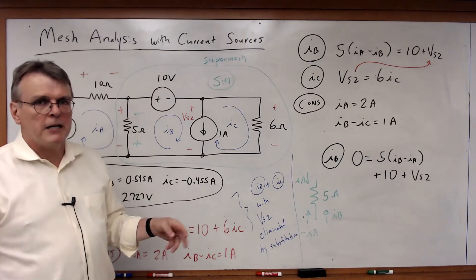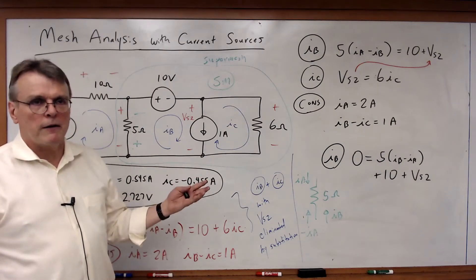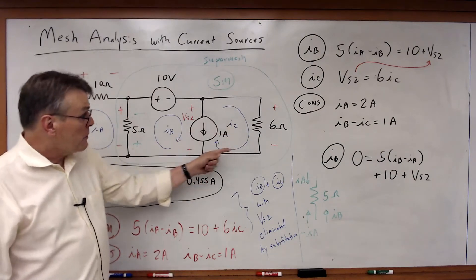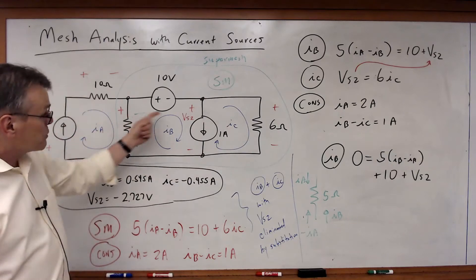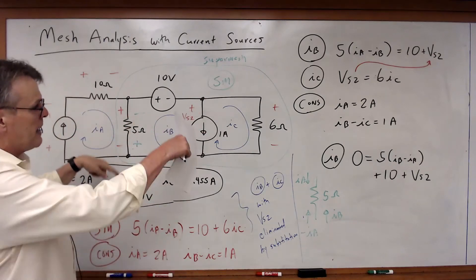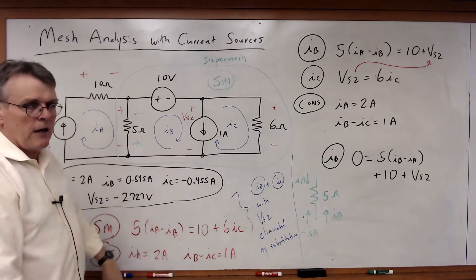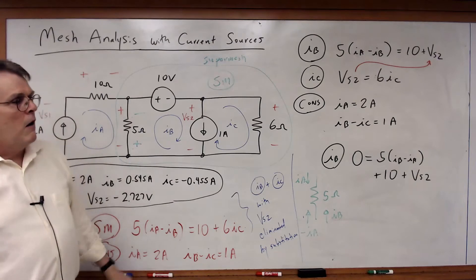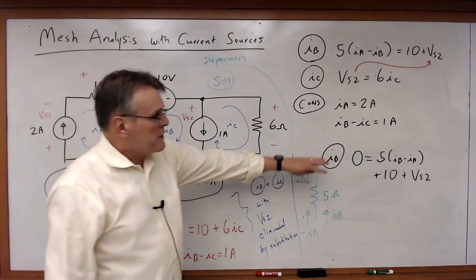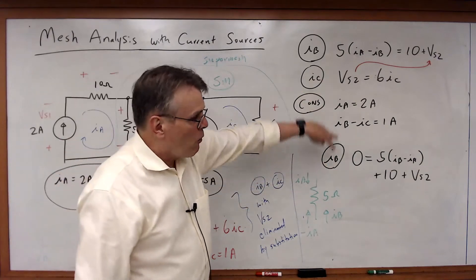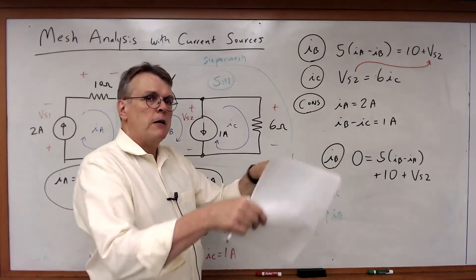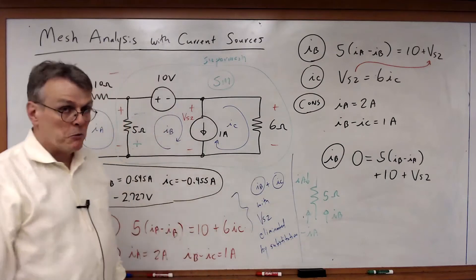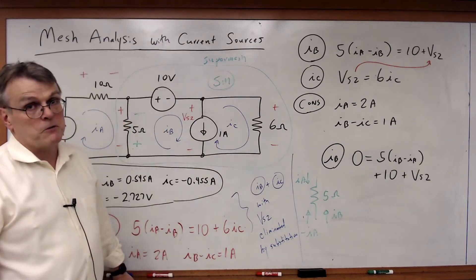You will not get a wrong answer as long as you correctly express the voltage drop through a resistor in terms of the difference between the two currents. This is truly arbitrary — you're not constrained to any particular polarity. You could randomly make mesh currents clockwise or counterclockwise. You'll wind up with a different form of the same equations, with terms on different sides of the equal sign, but you'll still get the same answer.